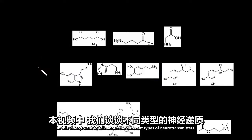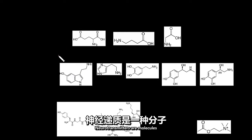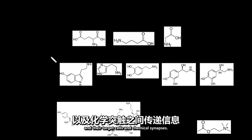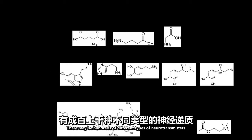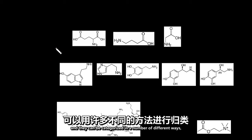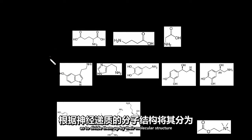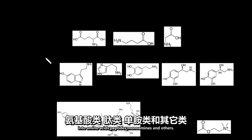In this video, I want to talk about the different types of neurotransmitters. Neurotransmitters are molecules that communicate information between neurons and their target cells at chemical synapses. There may be hundreds of different types of neurotransmitters, and they can be categorized in a number of different ways, but probably the most common is to divide them up by their molecular structure into amino acids, peptides, monoamines, and others.